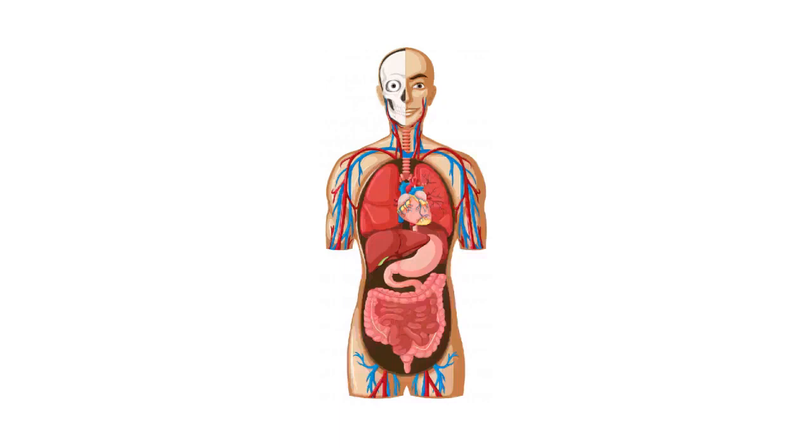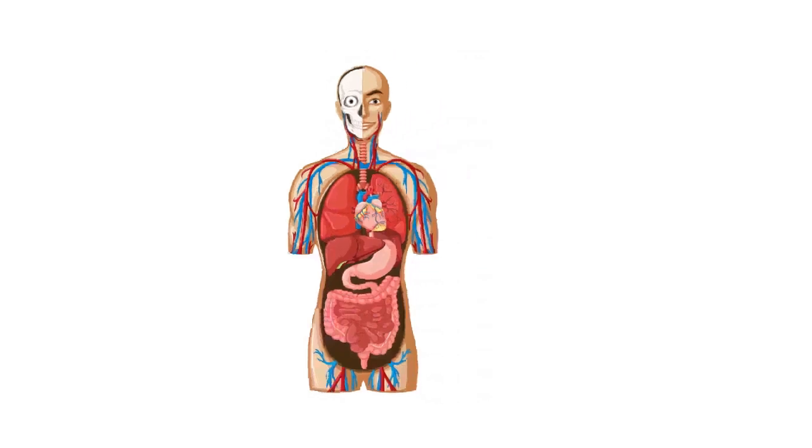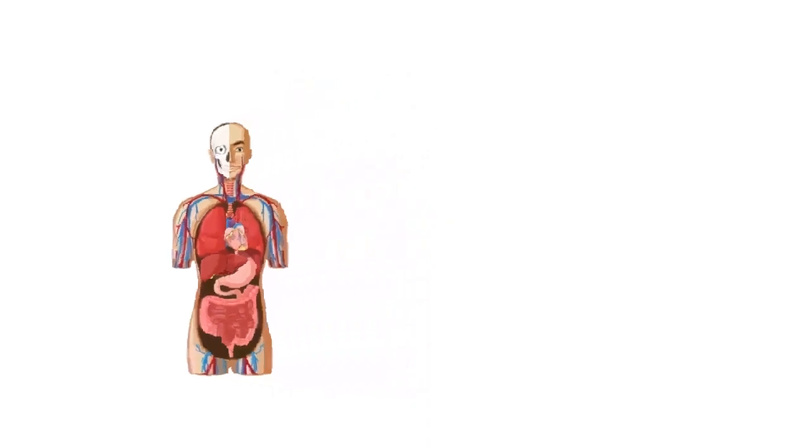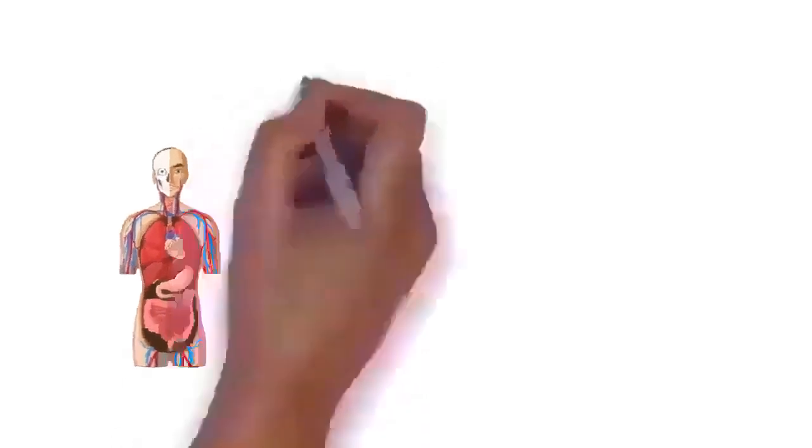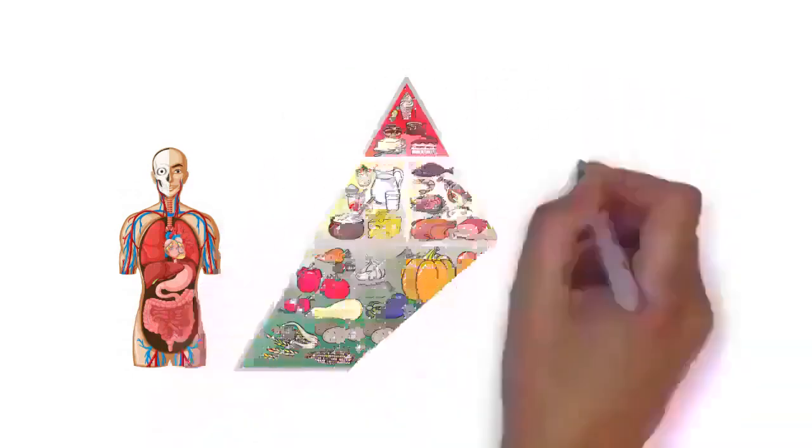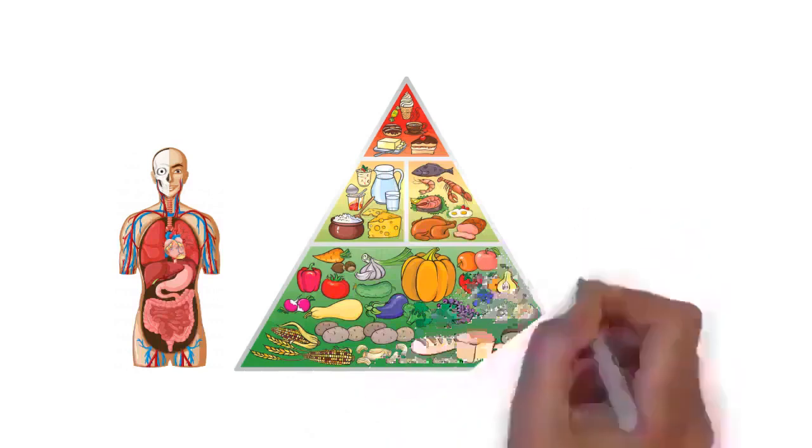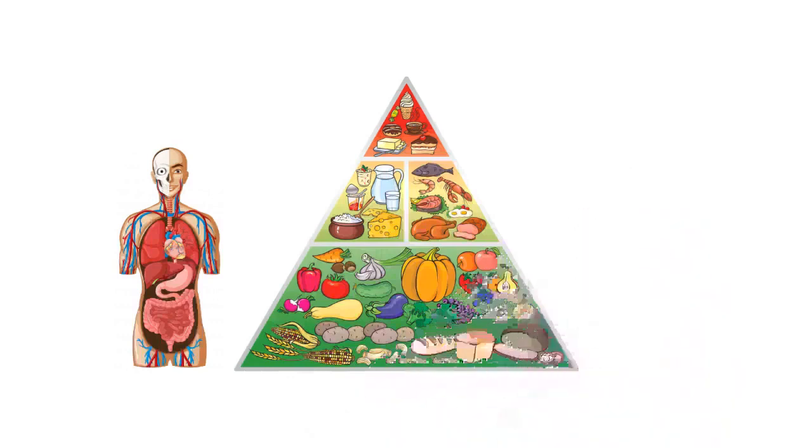Height, weight, shape, and other body proportions vary individually and with age and sex. Body shape is influenced by the distribution of muscle and fat tissue. Development of the human body is the process of growth to maturity. The process begins with fertilization, where an egg released from the ovary of a female is penetrated by sperm. The egg then lodges in the uterus, where an embryo and later fetus develop until birth. Growth and development occur after birth, and include both physical and psychological development, influenced by genetic, hormonal, environmental, and other factors.